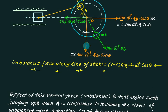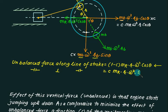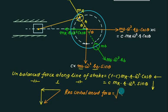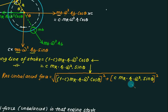Similarly, perpendicular to the line of stroke, replacing m_b times r_b with m times r, the perpendicular unbalanced force is c times m times r times omega squared times sin theta, and the direction of this force is downward. The resultant unbalanced force is the vector sum of both components, which can be obtained using the Pythagorean theorem. This final equation for the resultant unbalanced force is entirely dependent on the value of theta.